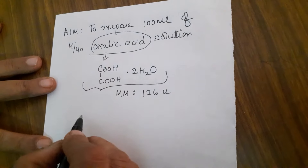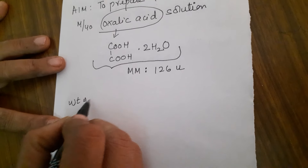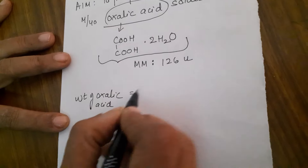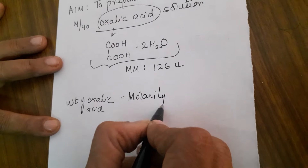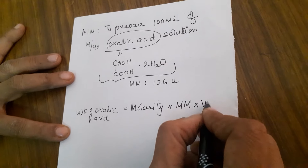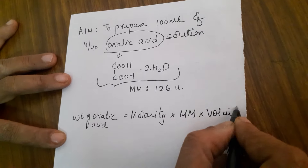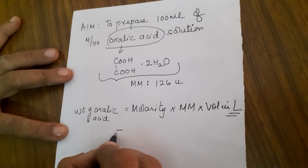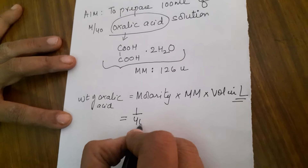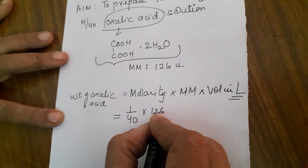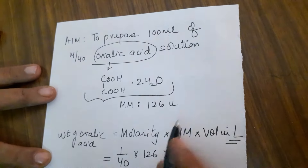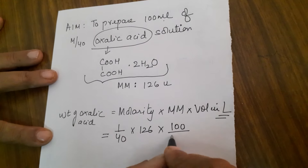Now, to prepare the solution, you will be using the formula: weight of oxalic acid needed = molarity × molecular mass × volume of solution in litres. Molarity is M/40, so one-by-40. Molecular mass is 126. Volume of solution in litres — 100 ml, but we need it in litres, so divide by 1000. This gives us 0.315 grams.